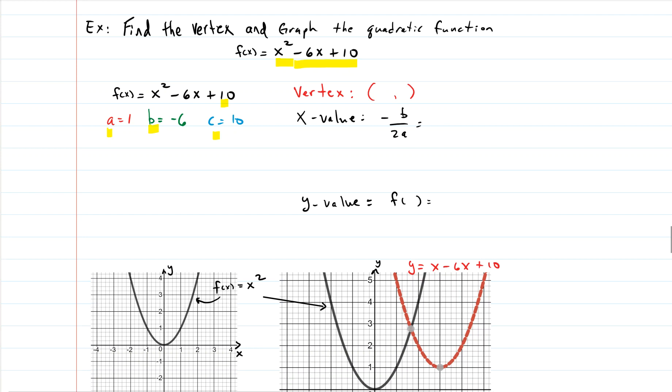So we need to compute then negative b over 2a. So we have our negative and what is our b? Our b is negative 6 divided by 2 times a and a is 1. That gives us a negative and a negative give us a positive. So this negative when it goes in makes this a positive. So we have a positive 6 over 2 which gives us 3.